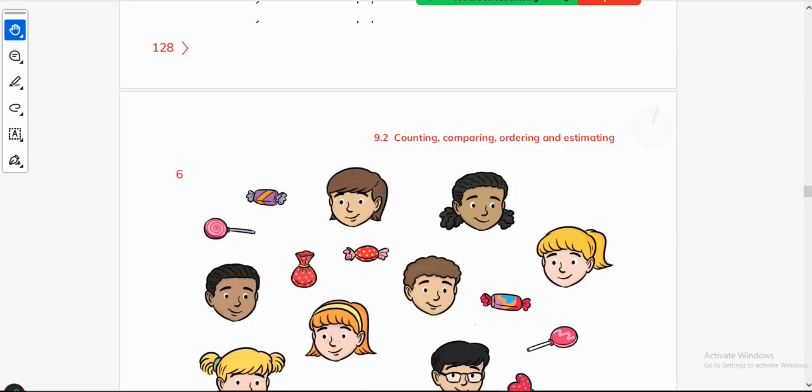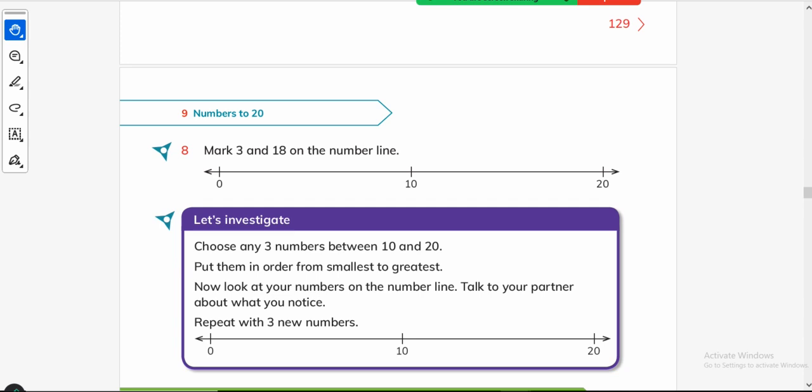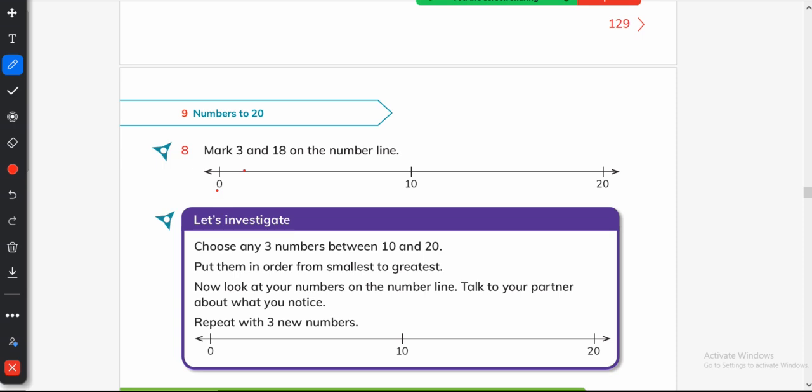On the number line, mark 3 and 18. Where will 3 be? 0, 1, 2, 3 will be right here because it is less than 5. And 18 will come right here, 18 is less than 20. If your child is not doing the number line thing, tell them to write all the numbers first to understand how number line works. Tell them to write all the numbers or say all the numbers on the number line. Thanks for watching my today's video, I'll make new videos later. Allah Hafiz.